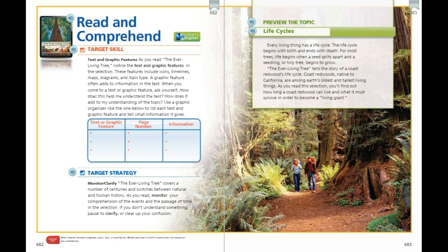Our target skill this week is text and graphic features. As you read The Ever-Living Tree, notice the text and graphic features in the selection. These features include icons, timelines, maps, diagrams, and italic type. A graphic feature often adds to information in the text. When you come to a text or graphic feature, you can ask yourself: how does this help me understand the text? How does it add to my understanding of the topic?